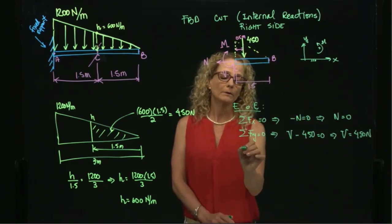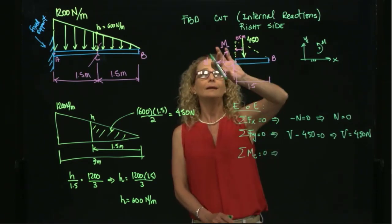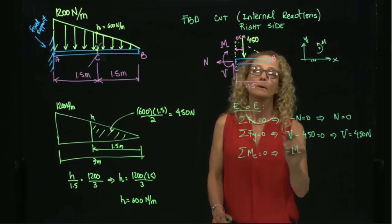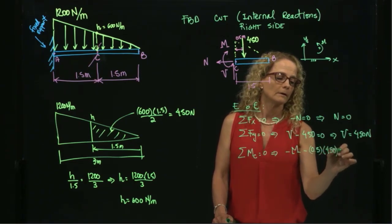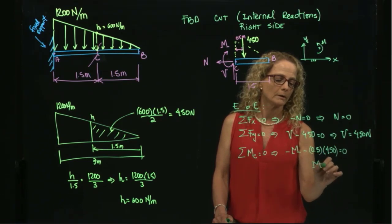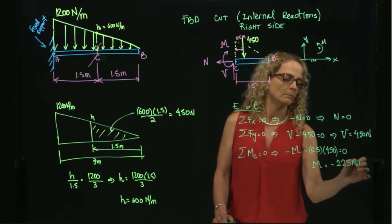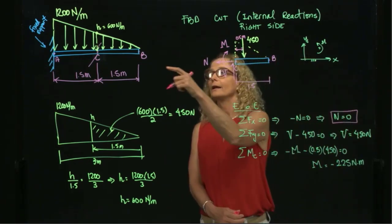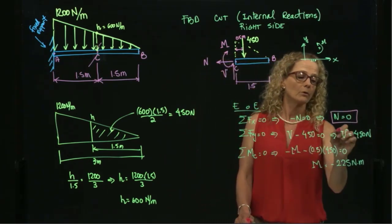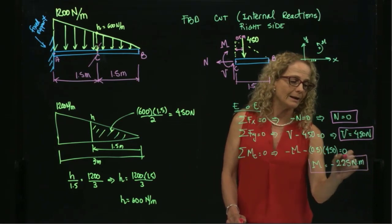Then I take moments with respect to point C and get negative M minus 0.5 times 450 equals zero. Therefore my moment M equals negative 225 newton-meters. So those are my three results: no normal force, a positive shear force, and a negative bending moment.